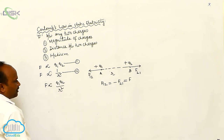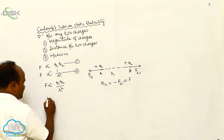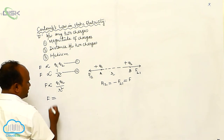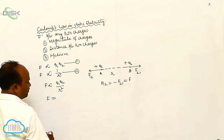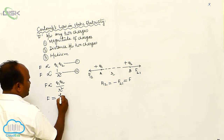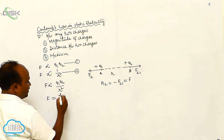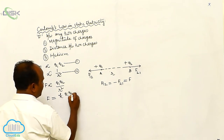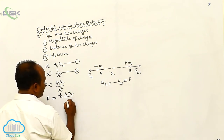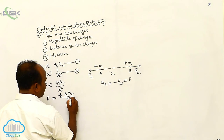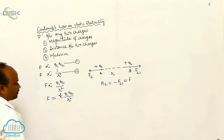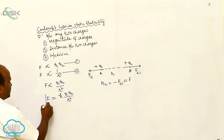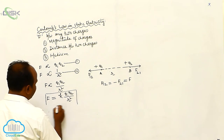Now, F is equal to some constant K multiplied by Q1 Q2 divided by R². This is called Coulomb's law.